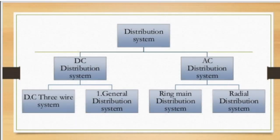This is the main classification of distribution systems. According to the nature of supply, there are two types: DC distribution systems and AC distribution systems. DC distribution includes the DC three-wire system and DC two-wire system. AC distribution systems are classified into radial, loop, and ring main distribution systems.